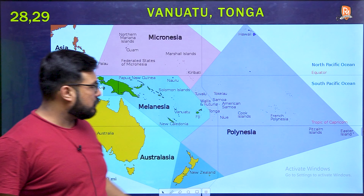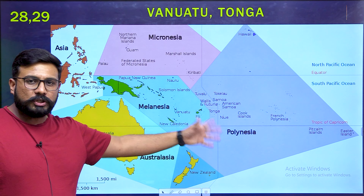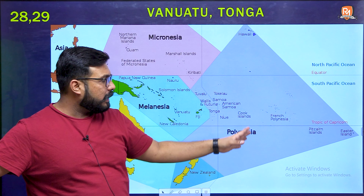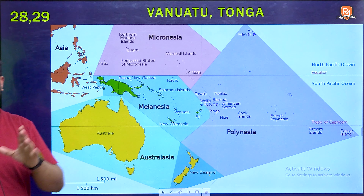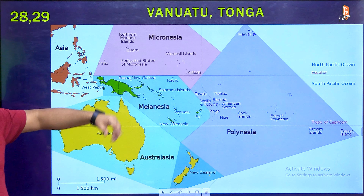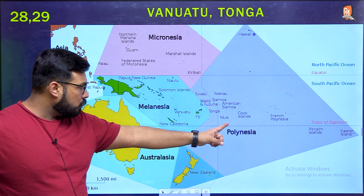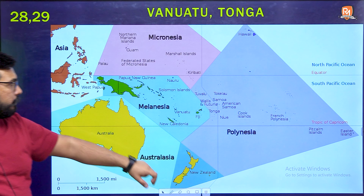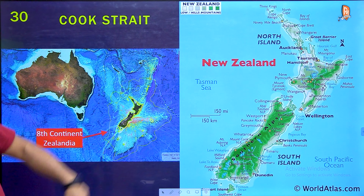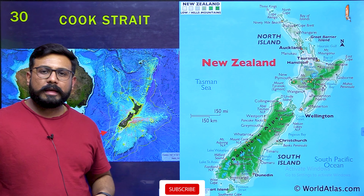This location becomes important. The Tonga group of islands is found in Polynesia, and Hawaii islands are also included in Polynesia. So the first grouping of islands — Vanuatu and Tonga — is important from a mapping perspective.